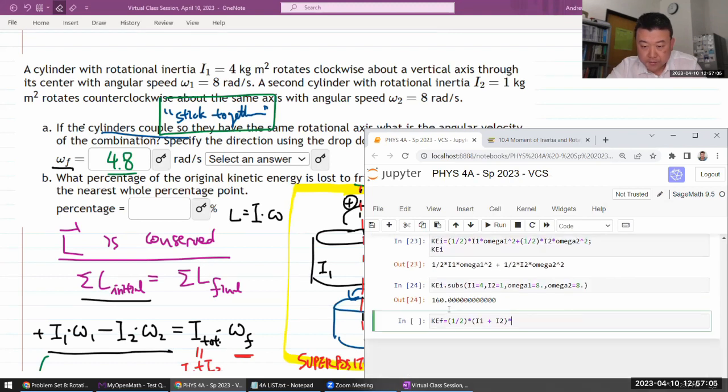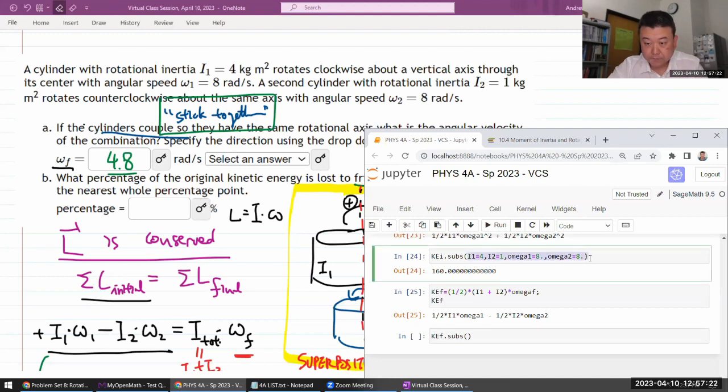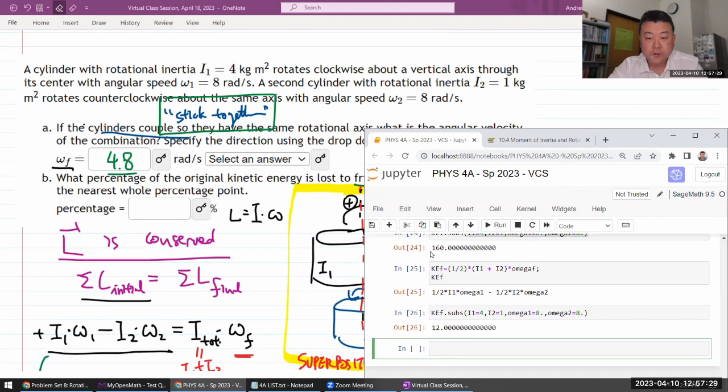So yeah, I have omega final in numbers. So let me just, or omega final in symbolic form. So this is my final kinetic energy. Let's substitute in the numbers we have. Alright. So we went down from 160 joules basic SI unit to 12 joules or the difference of 148 joules.